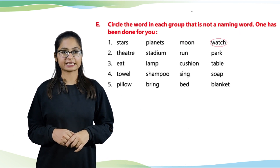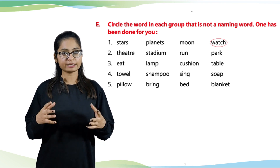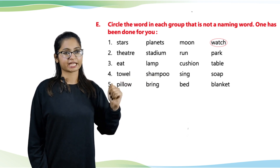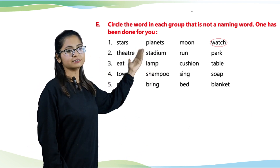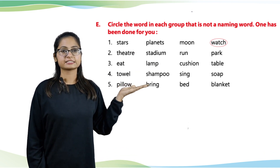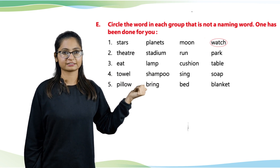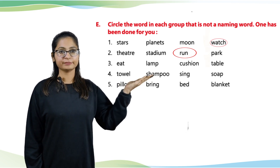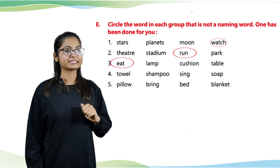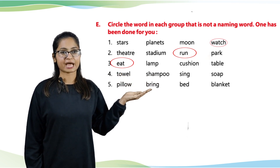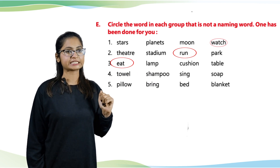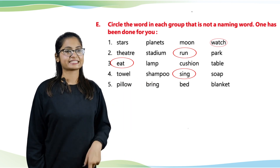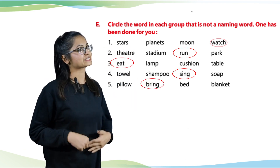Moving towards part E: circle the word in each group that is not a naming word. One has been done for you — earth, planets, moon, watch — and 'watch' has been circled. Next: theater, stadium, run, park — circle 'run'. Next: eat, lamp, cushion, table — circle 'eat'. Next: towel, shampoo, sink, soap — circle 'sink'. Next: pillow, drink, bed, blanket — circle 'drink', because 'drink' is a verb.